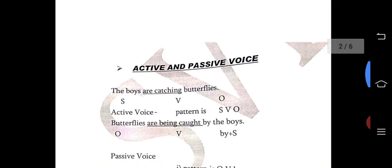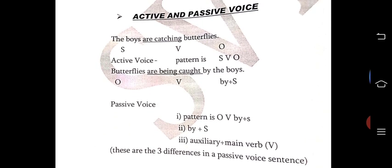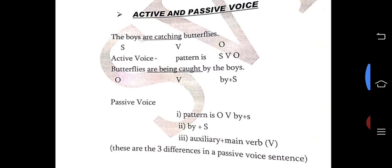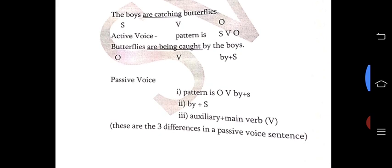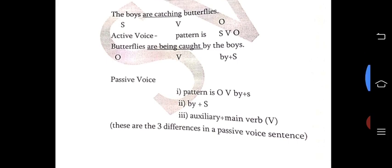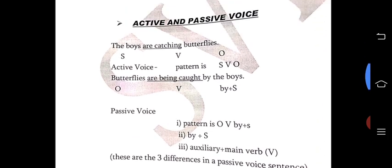See the chart I have given in the material — active and passive voice. For example: 'The boys are catching butterflies.' This is active. The active voice pattern is SVO — subject, verb, object. In passive: 'Butterflies are being caught by the boys.' The passive voice pattern is OV + by + S, where the auxiliary plus main verb is used. These are the key differences in passive sentences.